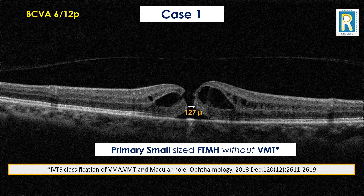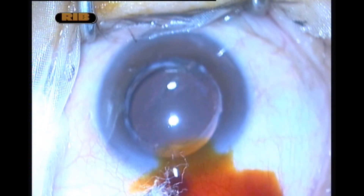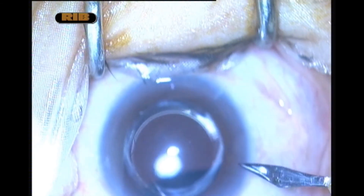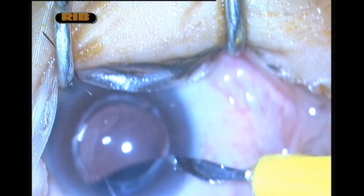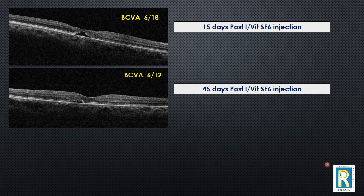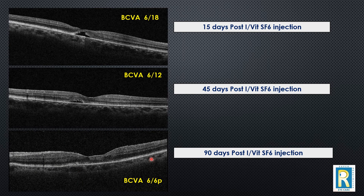Small macular holes can close on their own, but this patient was having significant vision problems so we decided to treat. We knew that vitrectomy would close the hole 100 percent of the time, but we also knew that such holes can be successfully closed by injecting special chemicals. So in this case, we did not operate — we just did an injection of intravitreal SF6 gas. You can see the gas bubble here. In 15 days, the inner edges of the hole had closed, and over time the outer retinal defect also vanished, with full recovery of vision.